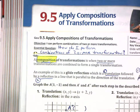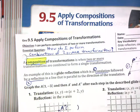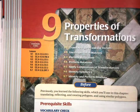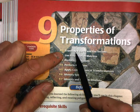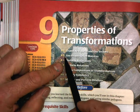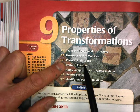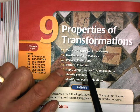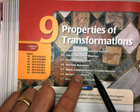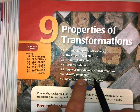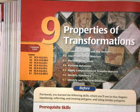Welcome to 9.5, Apply Compositions of Transformation. So we are making our way through Chapter 9. We've done Section 1 on Translating, we skipped over Chapter 2 on Properties of Matrices, we did Section 3 on Reflections, and also Section 4 on Rotations. And now we're going to look at Compositions. After that we're going to look at Symmetry and Dilations, and we will be done with Chapter 9.